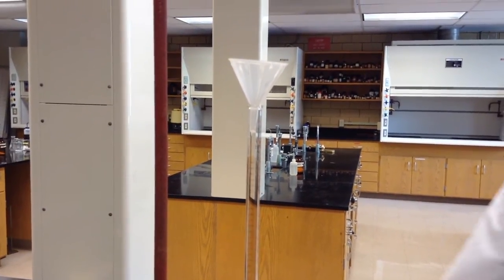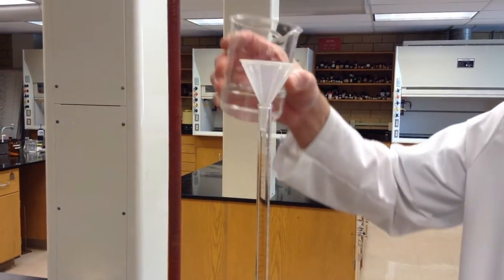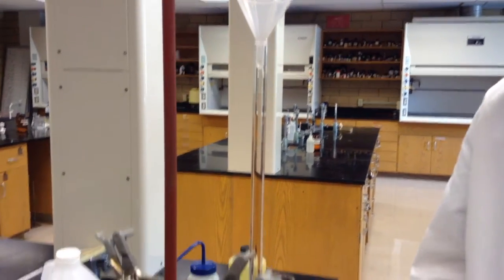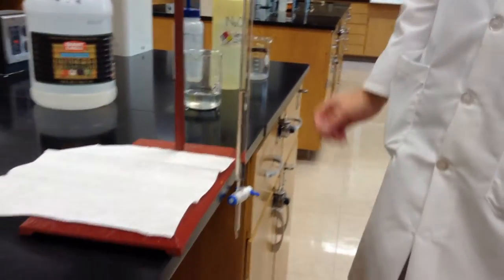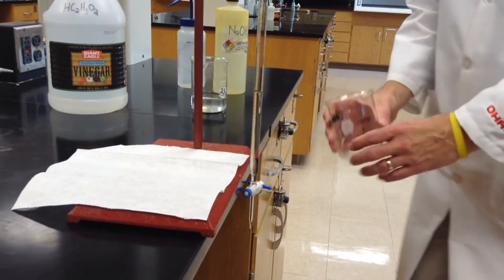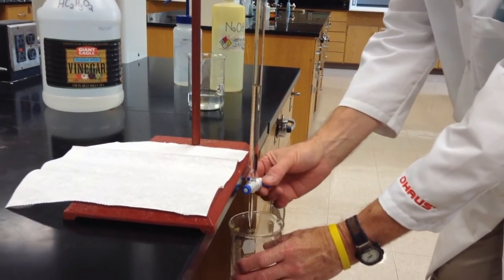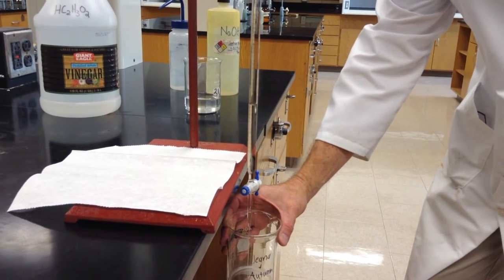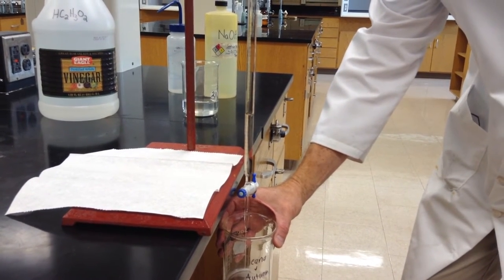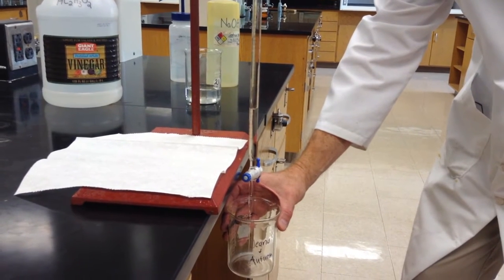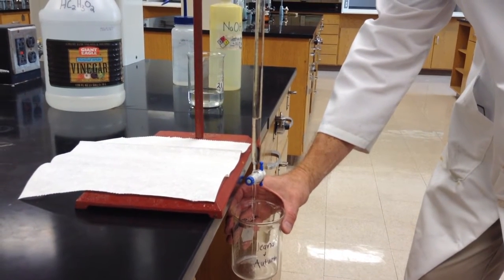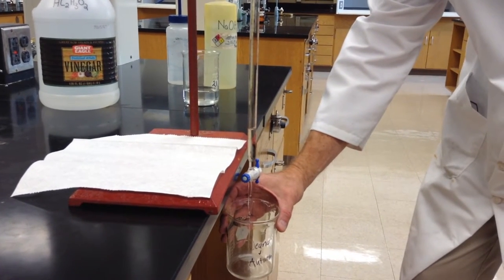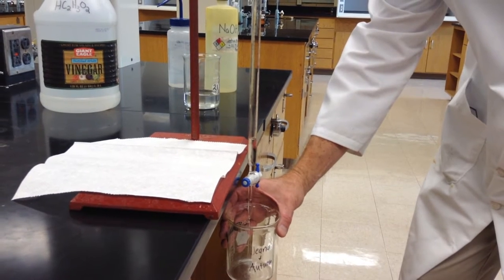We then want to wash the burette with two 5-milliliter portions of NaOH. From a beaker, add approximately 5 milliliters of NaOH through the funnel. Then, with a waste beaker, open up the stopcock and drain the 5 milliliters through the bottom. This will help to wash the burette of any contaminants. Once you have drained all 5 milliliters of the first wash, close the stopcock and then add a second fresh 5 milliliter wash to the burette and drain it out as well.